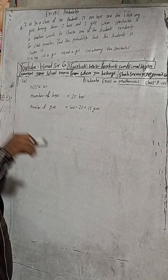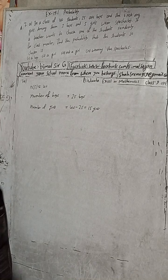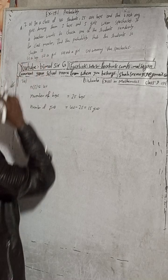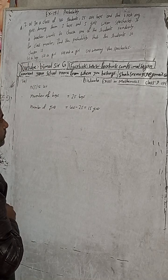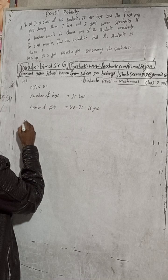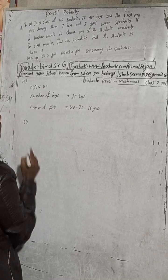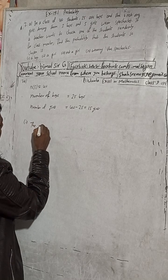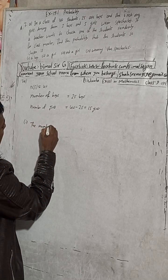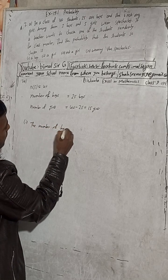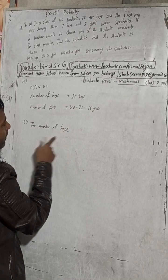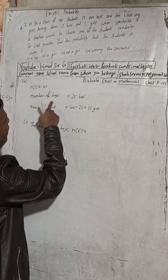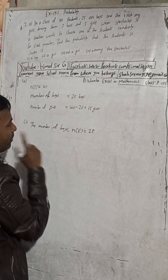So for part (a), the probability of choosing a boy — the number of boys is our favorable cases, indicated by N of E. How many boys are there? 25. So N of E is 25.